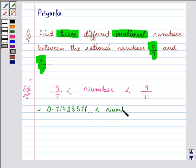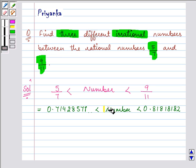And also 9 by 11 can be converted into decimals and can be written as 0.8181818182 and so on. So that means the required number should be between these two numbers and there can be a lot many numbers.